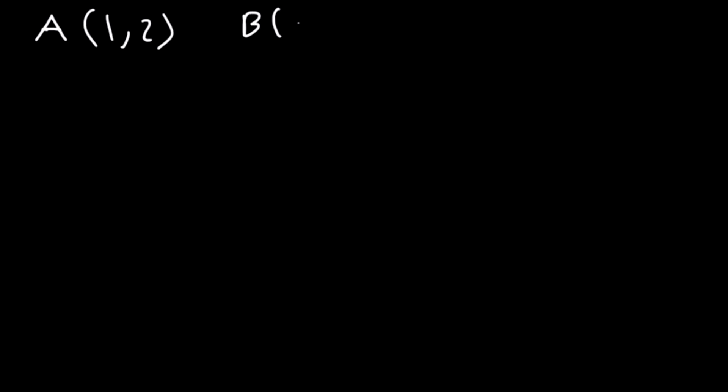Let's say we have an initial point A at (1, 2) and a terminal point B at (4, 6). Vector V is the directed line segment from A to B. How can you express vector V in terms of its components i and j, and how can you find the magnitude of vector V? First, let's draw a graph.